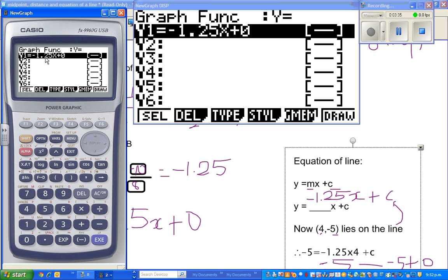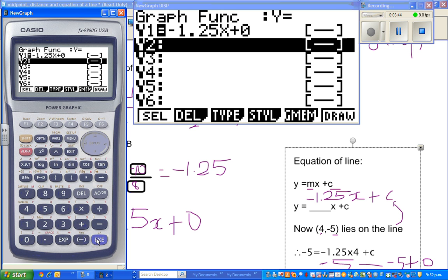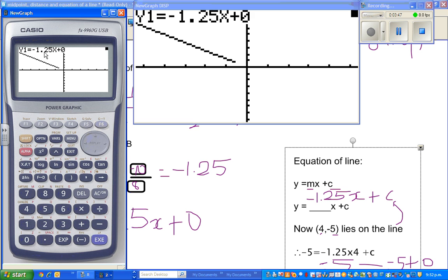Minus 1.25x. In my calculator, I have to type this again. Instead of typing, I am scrolling this. Execute, and then draw it. There we go.